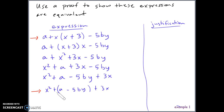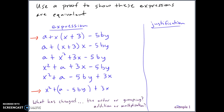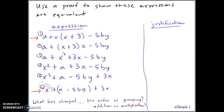The key question to ask yourself when figuring out the justification is: what has changed? Each time you see an expression, figure out what has changed — has the order changed or has the grouping changed? Then determine: did they change the order of addition or multiplication, or did they change the grouping of addition or multiplication? I'll number these expressions 1 through 6. Expression 1 is given.